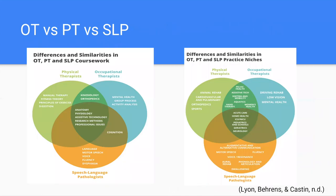These graphics show some Venn diagrams of how PT, OT, and SLP overlap. On the left you see some of the courses that all three take, and because we have similar educational backgrounds, the diagram on the right shows a lot of overlap in practice. Areas where you'll see all three professionals include acute care, home health, ICU/NICU, pediatrics and schools, geriatrics, and neurology.